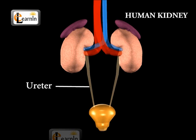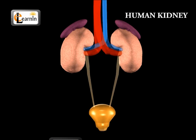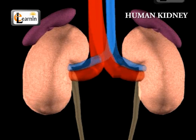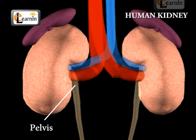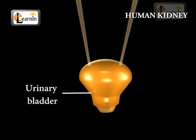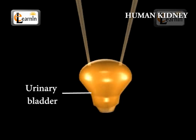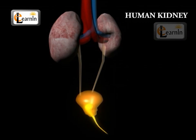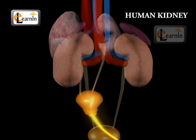Each ureter is a thin-walled tube. The interior of a ureter is wide and is called the pelvis. The ureters open into the urinary bladder. Urine is stored in the bladder till it is filled, and then it is sent out through a canal called the urethra.